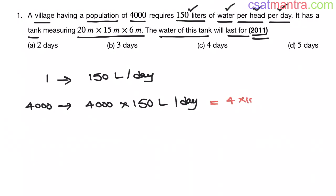This is 4 into 1000. I am writing 4000 as 4 into 1000. Into 150 liters. 4 into 150. That is 600 into 1000 liters.